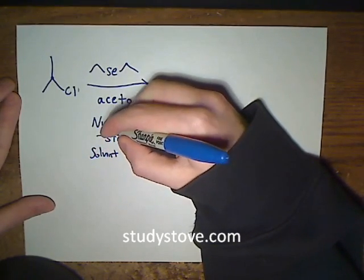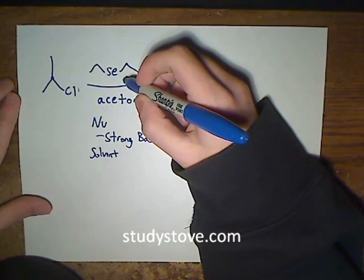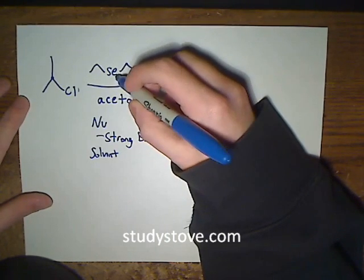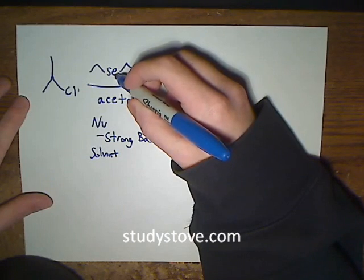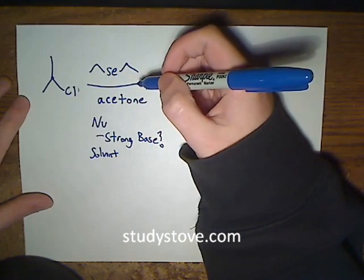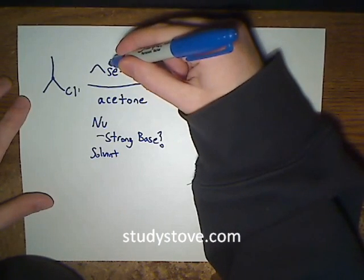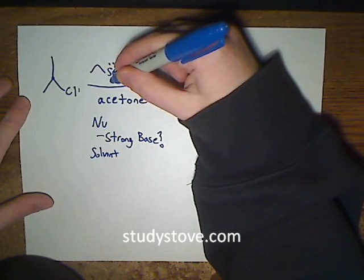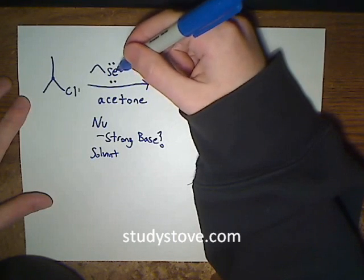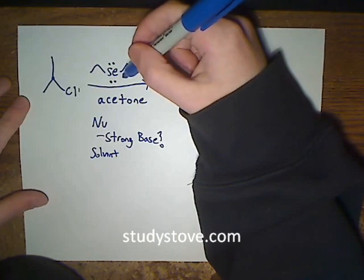The nucleophile here is this selenide molecule. Selenides are like ethers, except you have a selenium atom in place of an oxygen atom. Because selenium is in the same group as oxygen, it has the same number of valence electrons. So we have these two lone pairs that make this molecule a very good nucleophile.